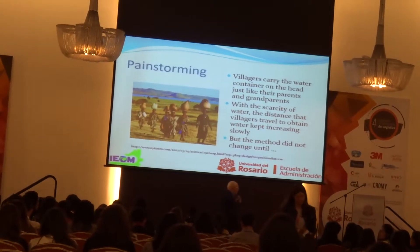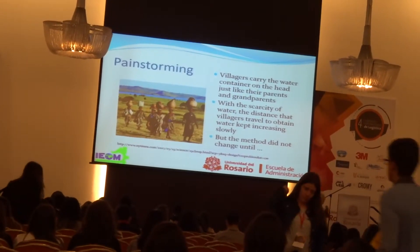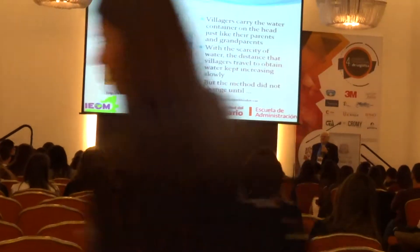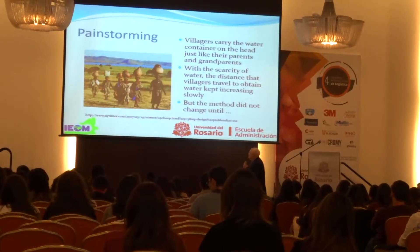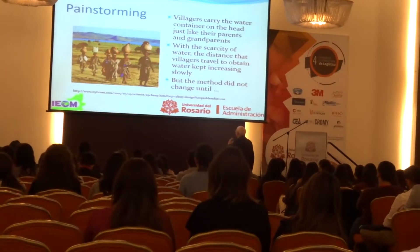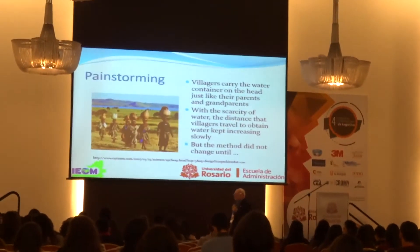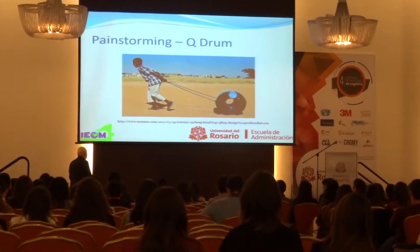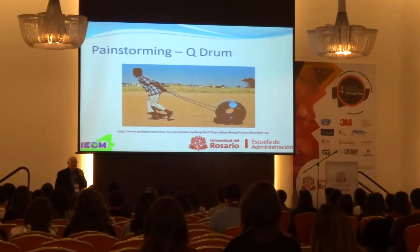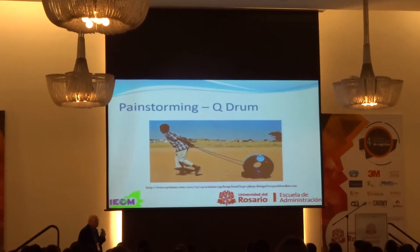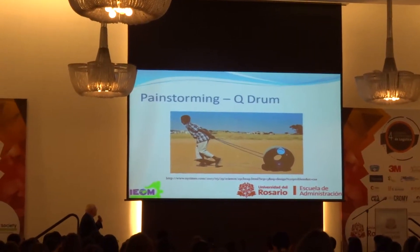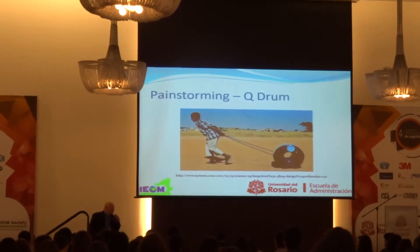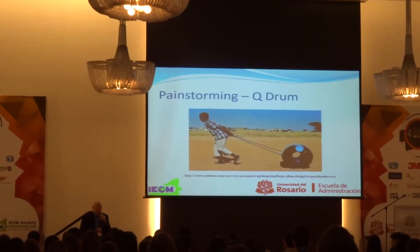You can read the slide as well as I can. This is how water is transported in certain parts of the world. Can you imagine what this weighs and how they're carrying it? This really didn't change until the cube drum was invented. Now the water is being hauled — still difficult, but much easier. How complex was it? How simple was it to develop this invention?